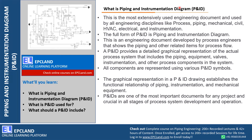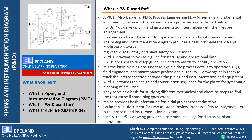For any process plant, P&IDs will be the basis. They will be developed by process engineers and will be associated with all other disciplines. Majorly they will cover piping, instruments, and mechanical equipment. Now let us talk about what P&IDs are used for. There are various purposes which this document fulfills.